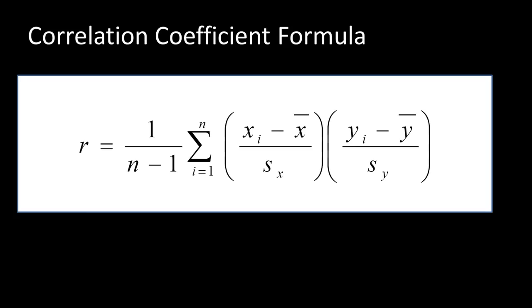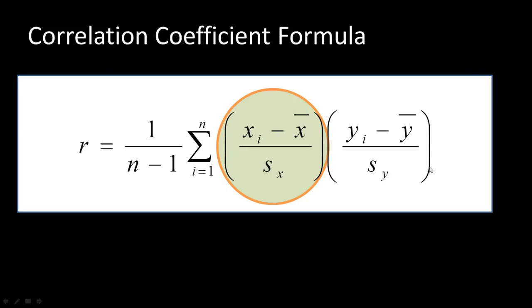The formula for the sample correlation coefficient r is: one divided by (n−1), times the sum from 1 to n of [(xi − x̄)/sx] times [(yi − ȳ)/sy]. The term (xi − x̄)/sx measures how many standard deviations away from the mean a particular x observation is. Similarly, (yi − ȳ)/sy measures how many standard deviations away from the mean that y quantity is.